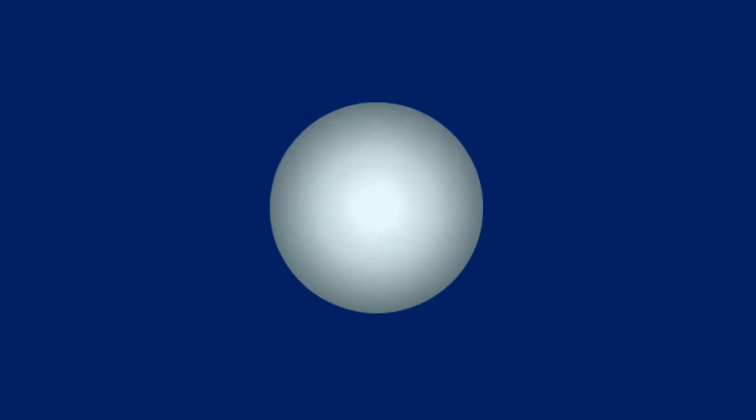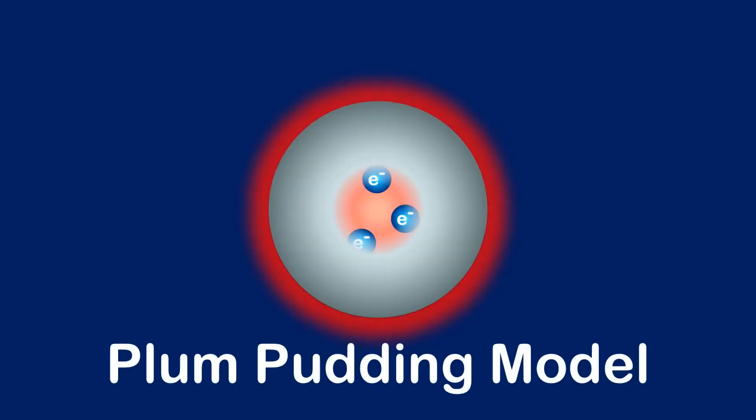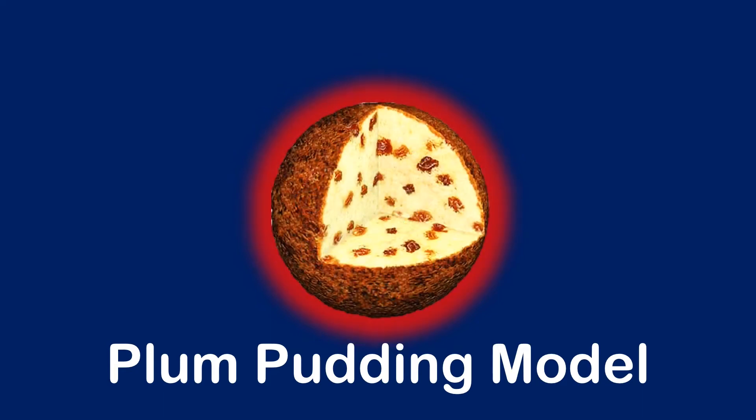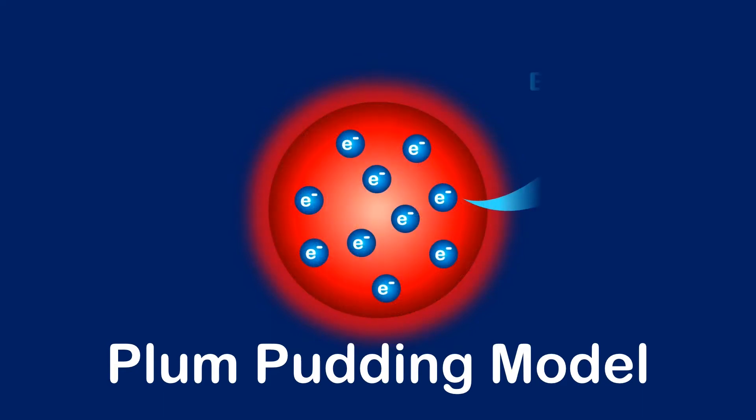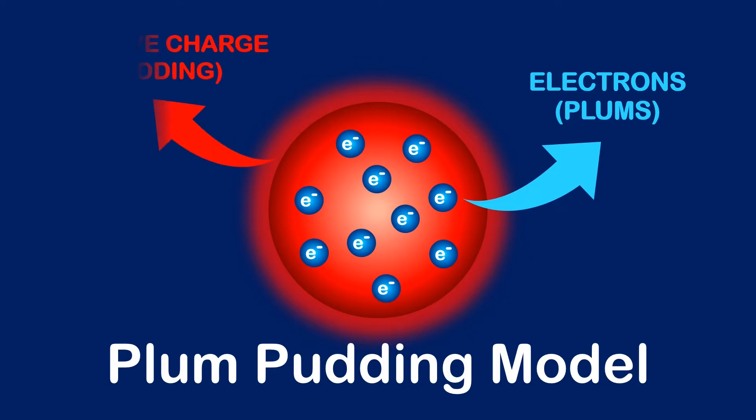So atoms weren't solid after all. Thompson called this the plum pudding model of the atom due to its uncanny resemblance to a plum pudding. The electrons were likened to the plums, and the ball of positive charge holding the electrons in place is the pudding.